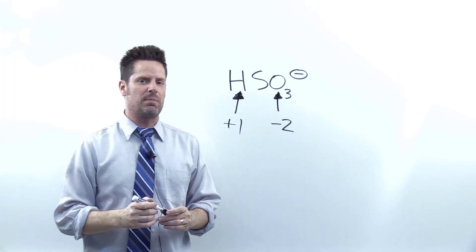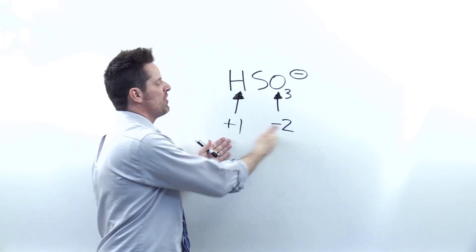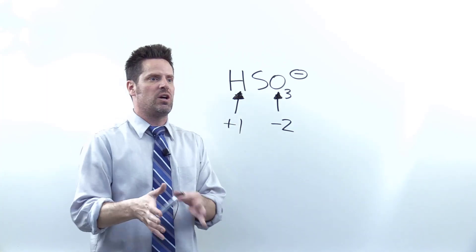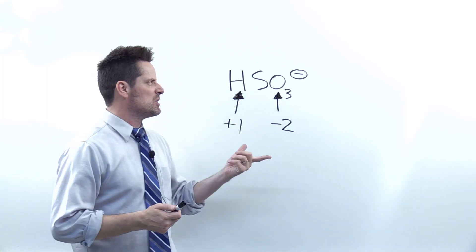So how do we identify sulfur's oxidation number? Well, we have to back calculate it from all the other oxidation numbers because there's not a hard, fast rule always for sulfur. Now, how do we do that?